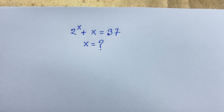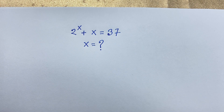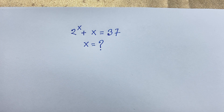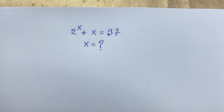Hello everyone. In this video, we have solved this interesting math Olympiad question. It is a nice exponential equation: 2 to the power x plus x is equal to 37. x is equal to what? How to solve this math Olympiad question?